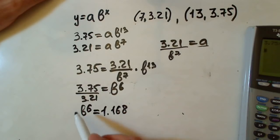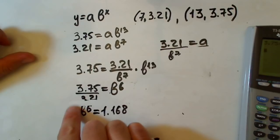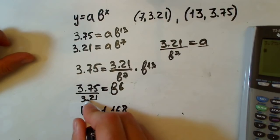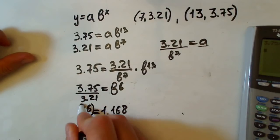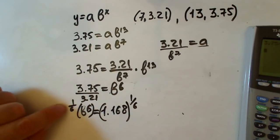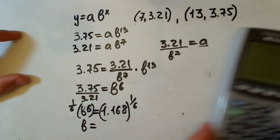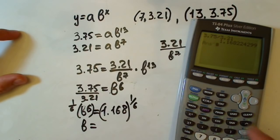To find b we should take the sixth root because we have sixth power. For some people it's more clear if you raise this to the reciprocal power, 1 over 6. This cancels because 6 multiplied by 1/6 equals 1. We have b equals 1.168 to the 1 sixth power.